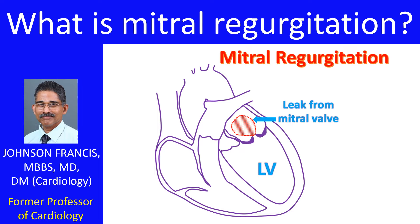Mitral regurgitation is a leak in the mitral valve between the left atrium and left ventricle. Normally, the mitral valve prevents backflow of blood from the left ventricle, the lower muscular chamber, when it contracts.